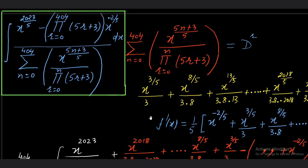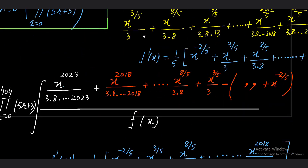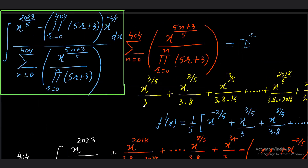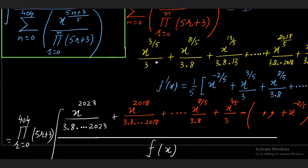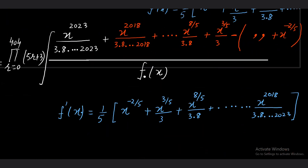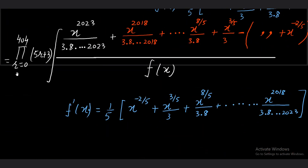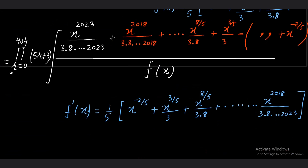Since the power of x is the same in both, and the second term has a big expression, we take it common. When we take it common, we are left with x^(2023) upon (3·8·...·2023), which is the product π(r) from r=0 to 4 of (5r+1).